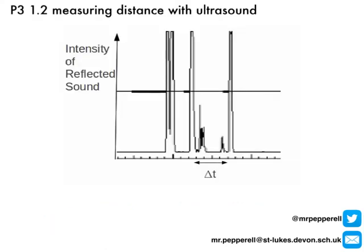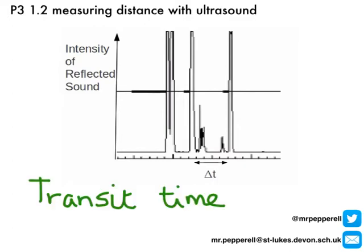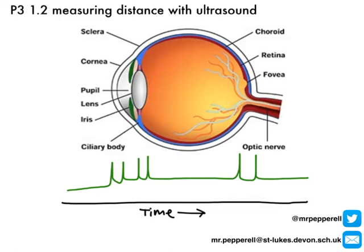What we actually see from an A-scan is one of these plots. The peaks on my plot, which you can see going up here, represent the partial reflection of the ultrasound wave being detected by the transducer. And along the bottom, we have the amount of time they took to reflect, shown in seconds. The time it takes for each pulse to be reflected back is what we call the transit time.